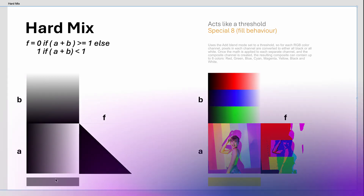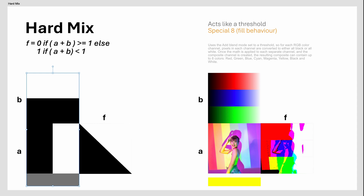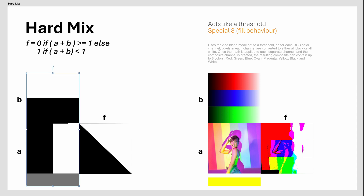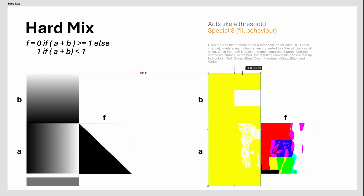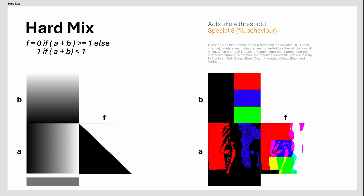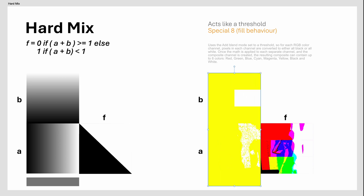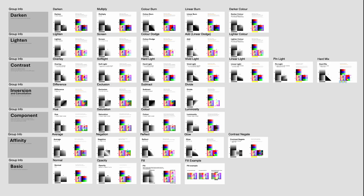The Hard Mix Blend Mode converts pixel channel values to 0 or 1, reducing the image to a limited number of base colors. The result is mostly a posterized image, mainly used for special effects like comic book style effects. Great results can also be achieved by lowering the fill percentage.